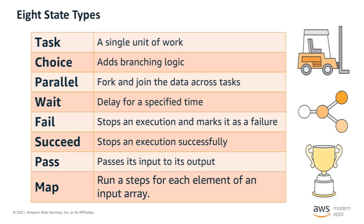Step Functions currently supports eight different kinds of states: task, choice, parallel, wait, fail, success, and the new map state, with more states coming in the future. State tasks are the things that do your work — they call your application components and microservices. One type pushes a call to an AWS service and the other dispatches tasks to activity workers, which long-poll for work. Choice states allow you to introduce branching logic to your state machines. Parallel states allow you to fork the same input across multiple states and then join the results into a combined output. This is useful when you want to apply several independent manipulations to your data, such as image processing or data retention.